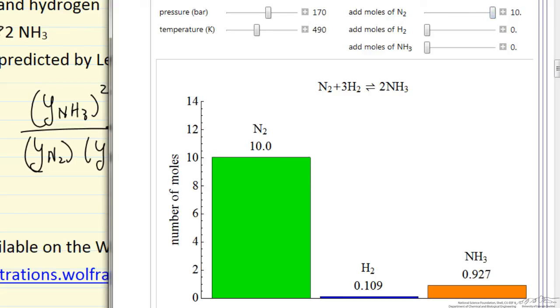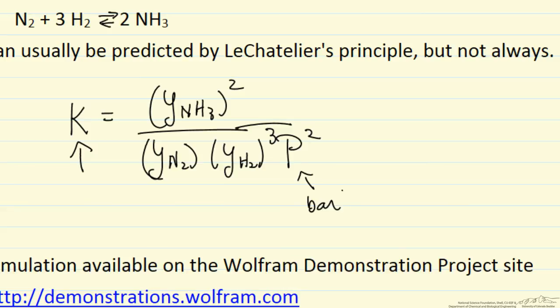The question is why is this happening? Well if we go back and look at our equilibrium expression, when we add nitrogen, we're decreasing the mole fraction of hydrogen, and so the mole fraction of hydrogen is cubed in this expression, and so this term, when hydrogen is a small number, and nitrogen is a relatively big number.